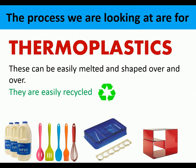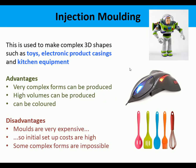We're going to look at some processes for thermoplastics. These are easily shaped over and over again, so easily formed. Injection moulding is used to make complex 3D shapes such as toys, electronic product casings, and kitchen equipment. The advantages are very complex forms can be produced, high volumes can be mass produced, and they can be self-coloured so they don't need finishing. Disadvantages are the setup costs and the moulds are very expensive, and some very complex shapes aren't possible.